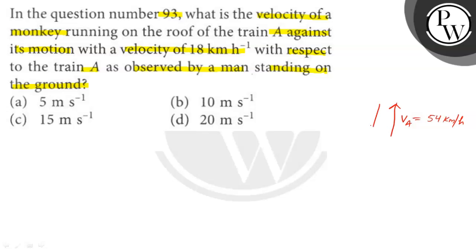the motion in the opposite direction is a monkey running and the velocity of a monkey with respect to train A is 18 km per hour. So, what will be the velocity of a monkey with respect to a person standing on the ground?